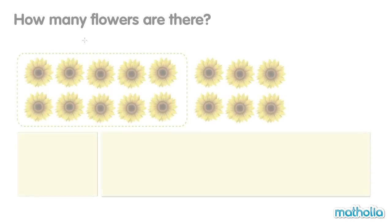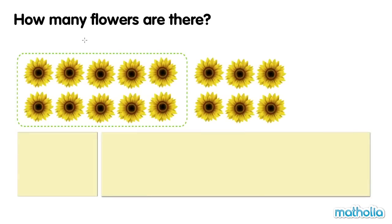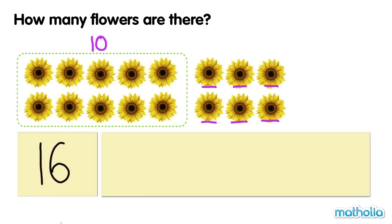How many flowers are there? Ten, eleven, twelve, thirteen, fourteen, fifteen, sixteen. There are sixteen flowers. Sixteen.